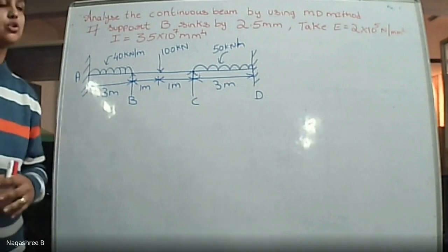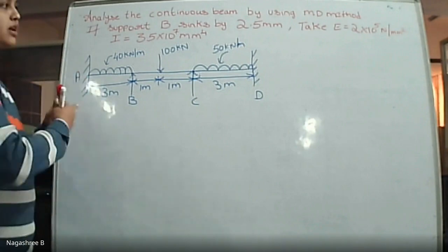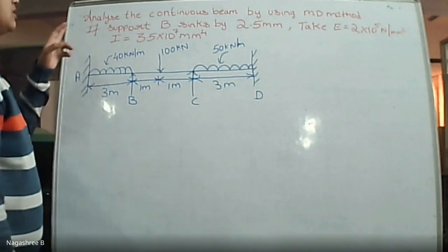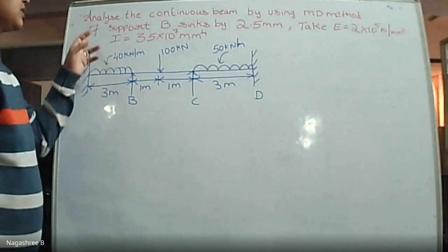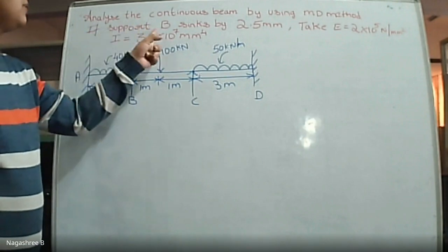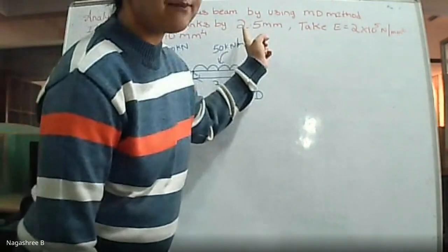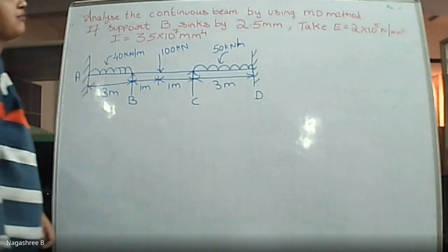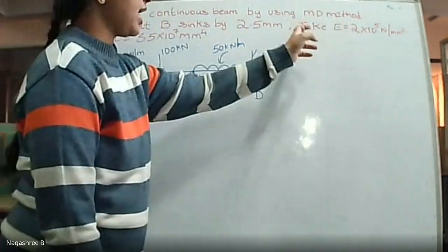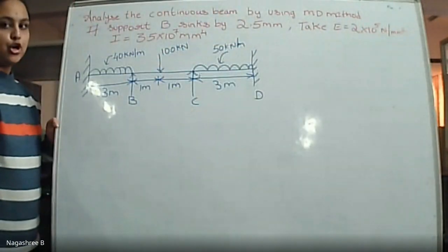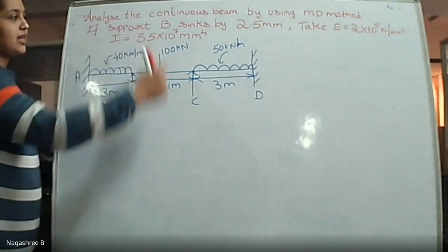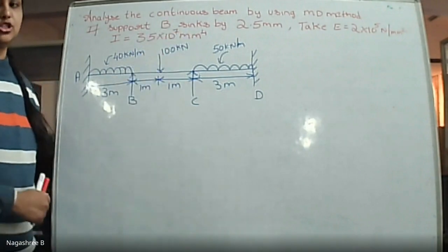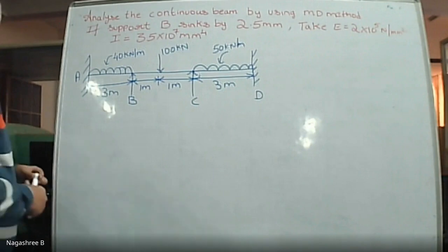In this question, we have been given a continuous beam to analyze. Apart from the beam geometry, there is a condition that support B is sinking by 2.5 mm. The value of E is given as 2×10⁵ N/mm², and the moment of inertia I is given as 3.5×10⁷ mm⁴.